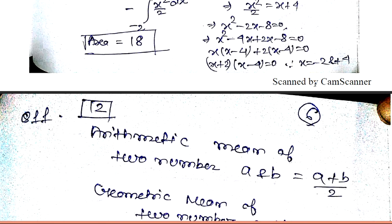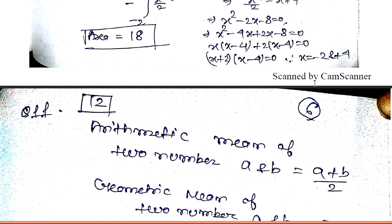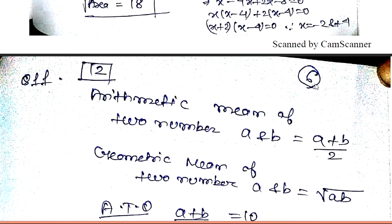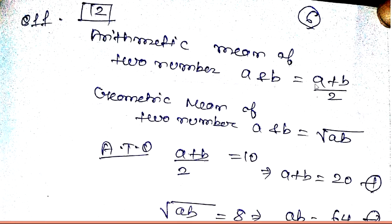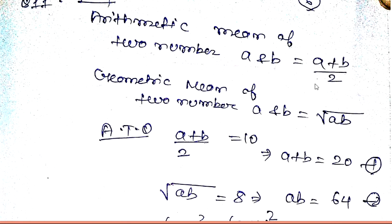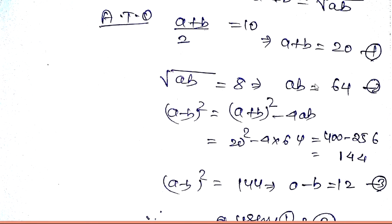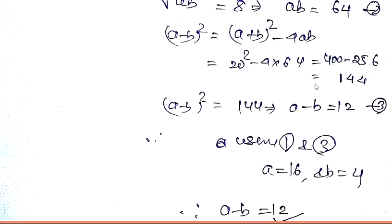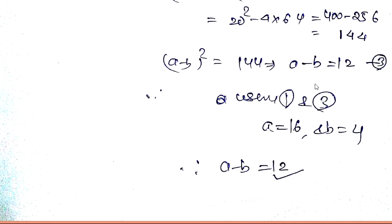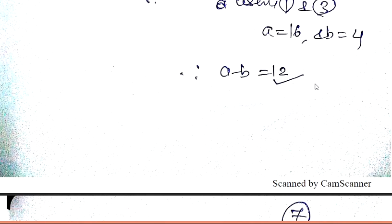Question number eleven answer is 12. The arithmetic mean of two numbers a and b is (a+b)/2, and geometric mean is √(ab). Given (a+b)/2 = 10, so a+b = 20, and √(ab) = 8, so ab = 64. Using the formula (a−b)² = (a+b)² − 4ab, we get a−b = 12. Solving gives a = 16 and b = 4, so the difference is 12.